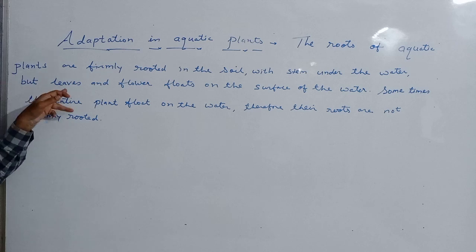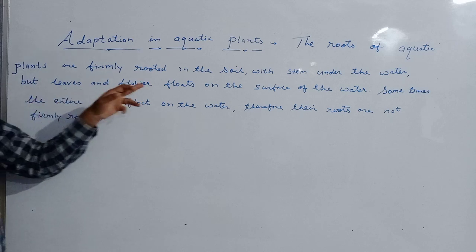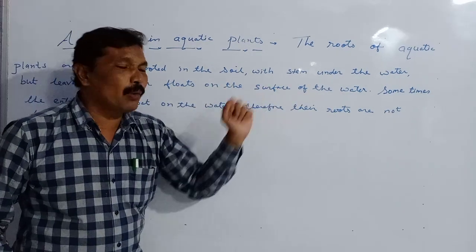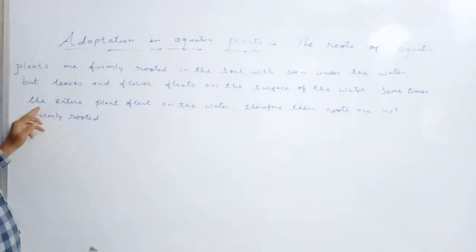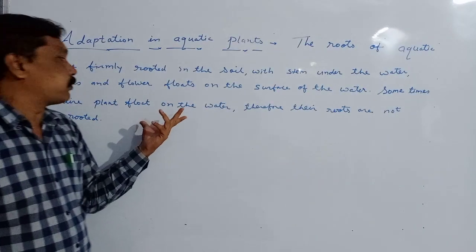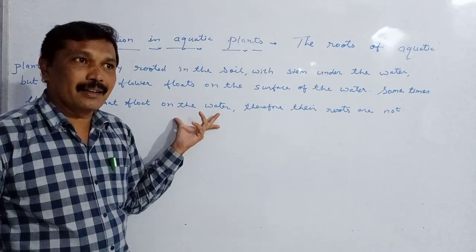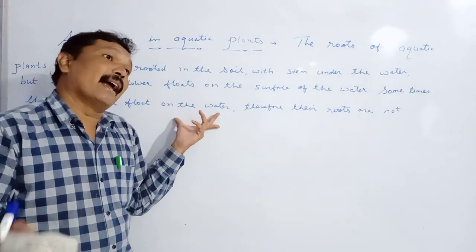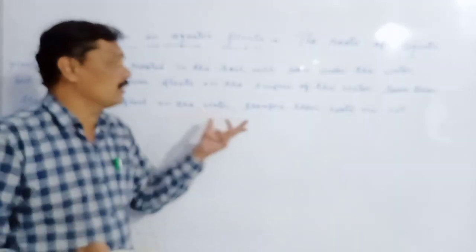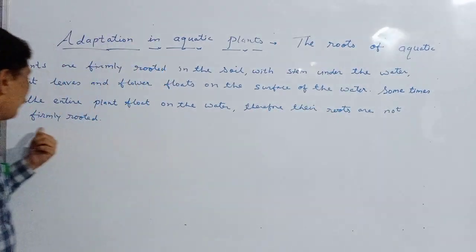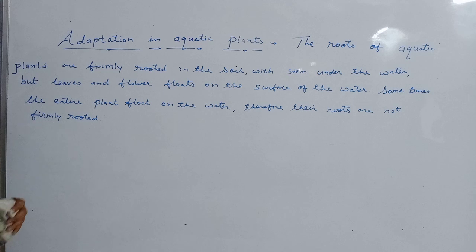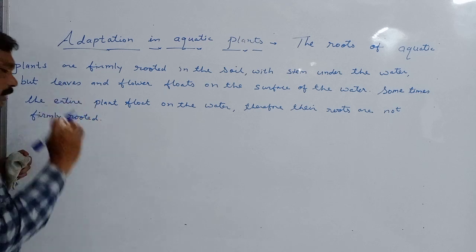But leaves and flowers float on the surface of the water. Sometimes the entire plant floats on the water. And when the entire plant floats on the water, the roots are not firmly rooted.